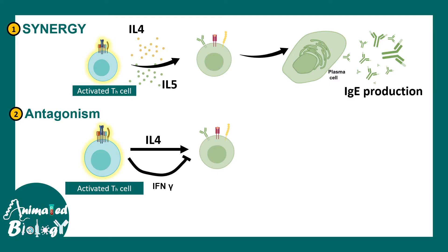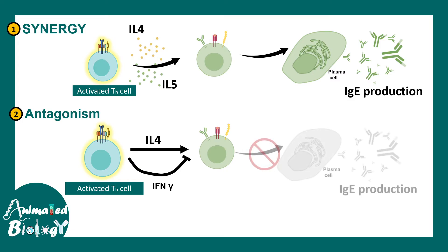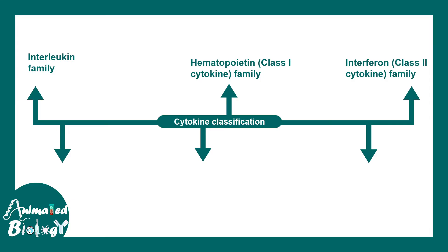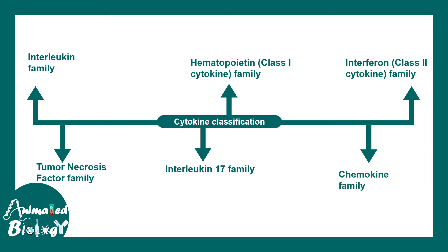There are six cytokine families: the interleukin family, class 1 cytokines or the hematopoietin family, class 2 cytokines or the interferon family, the tumor necrosis factor family, the interleukin-17 family, and the chemokine family. We'll take examples from all of these families to understand their functions in specific immunological contexts.